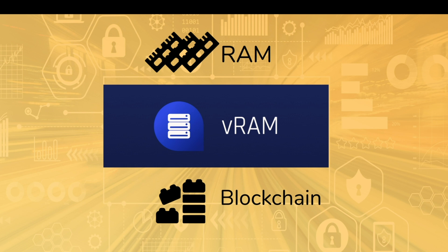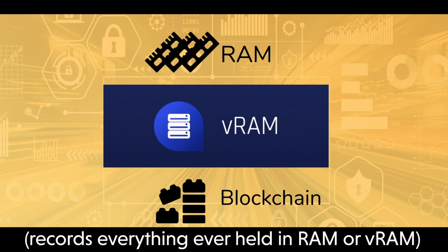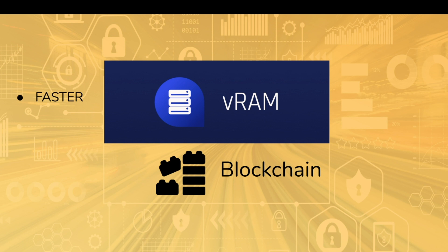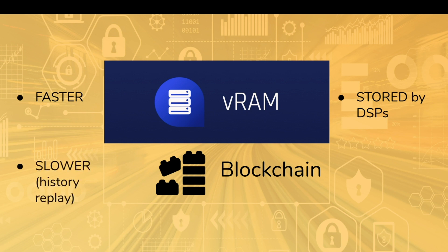There's actually another layer in this hierarchy — the blockchain. The blockchain records everything that has ever been in RAM, or by extension VRAM. It's all recorded in the blockchain. In fact, the blockchain is little more than a record of all the changes in RAM — we're talking about a state machine where the current state is the RAM, and changes in state are recorded in the blockchain. VRAM is faster than going through the blockchain to figure out old data. The blockchain stores everything but you'd have to replay through the history to retrieve past state.